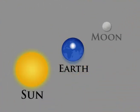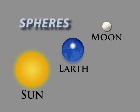The Earth, the Sun and the Moon are all approximately spherical or round in shape.